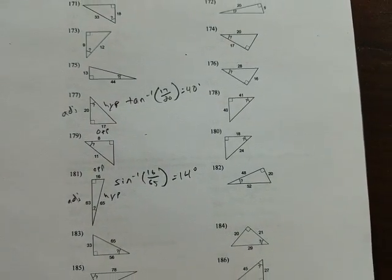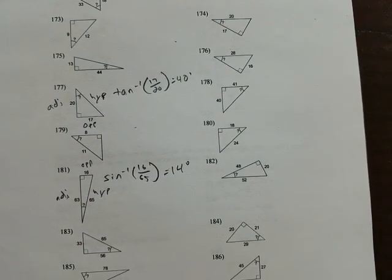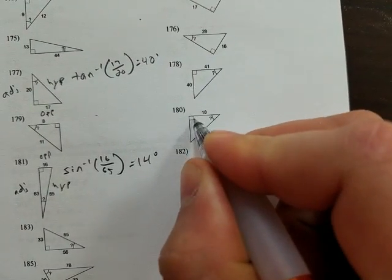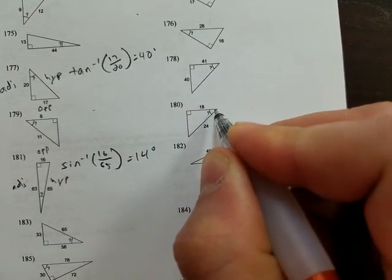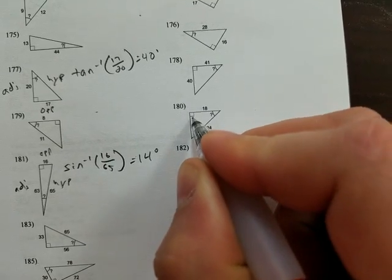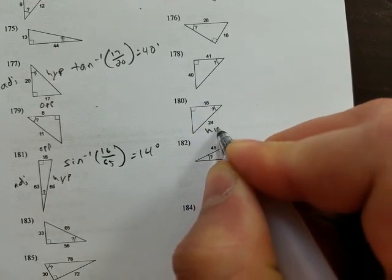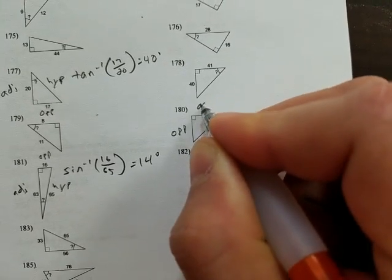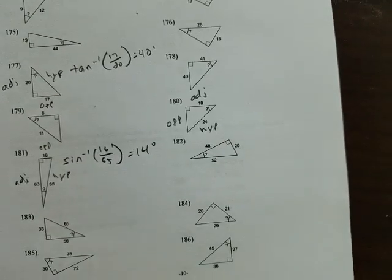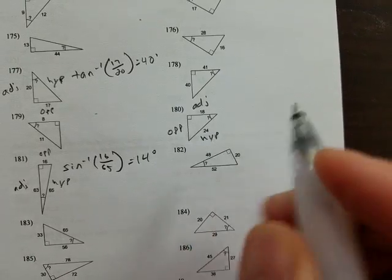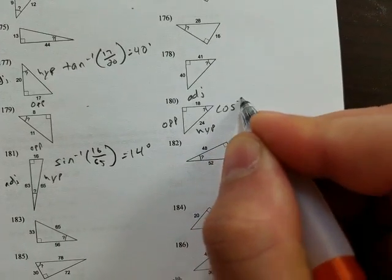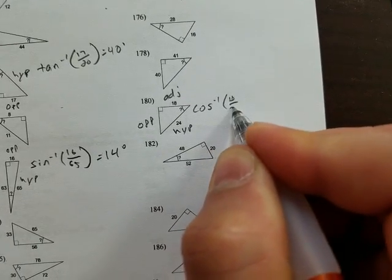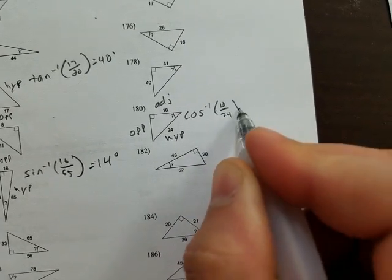And if I would like to do a cosine problem, I'll look at 180. Here's my angle, here's my right angle, reference angle, so right angle. So hypotenuse is here, opposite over here, and adjacent up here. So adjacent hypotenuse is what I'm given, that's cosine, so inverse cosine of 18 over 24 is what I'm interested in.